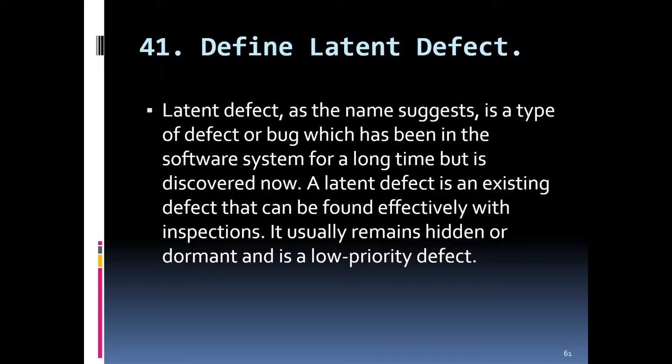Welcome back. The next question, part five, question number one: define latent defects. This is a very new term for a fresher but an interviewer can ask you about it. A latent defect is a type of defect or bug that has been in the software system for a long time but is discovered now. It is an existing defect that can be found effectively with inspections; it usually remains hidden, dormant, or is a low-priority defect.